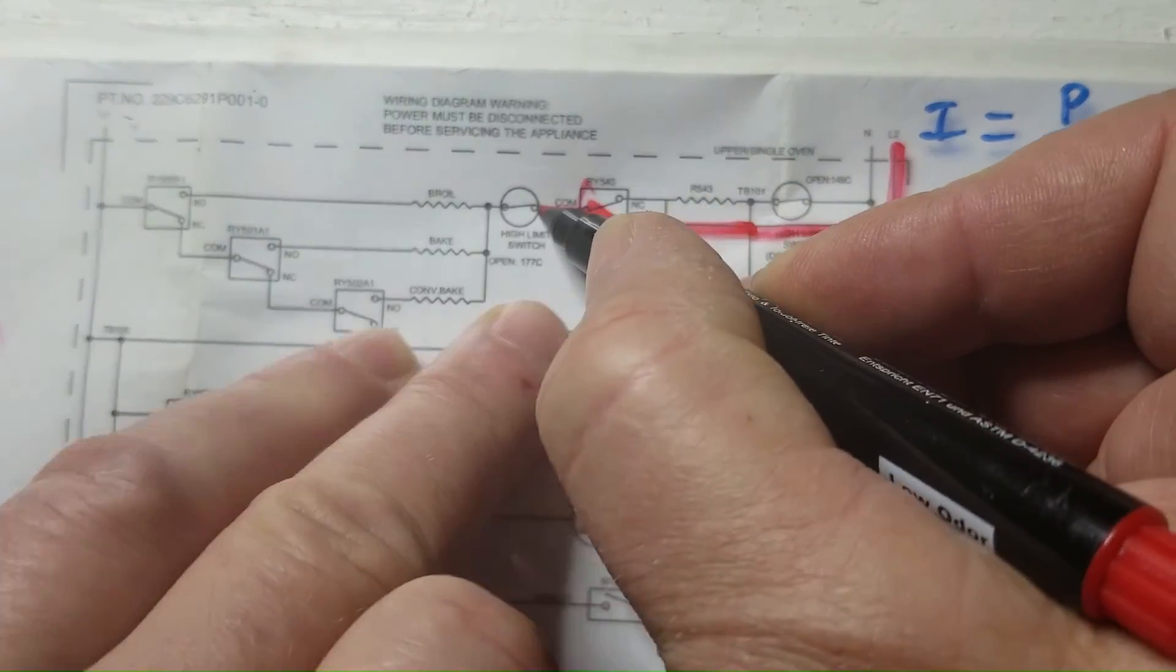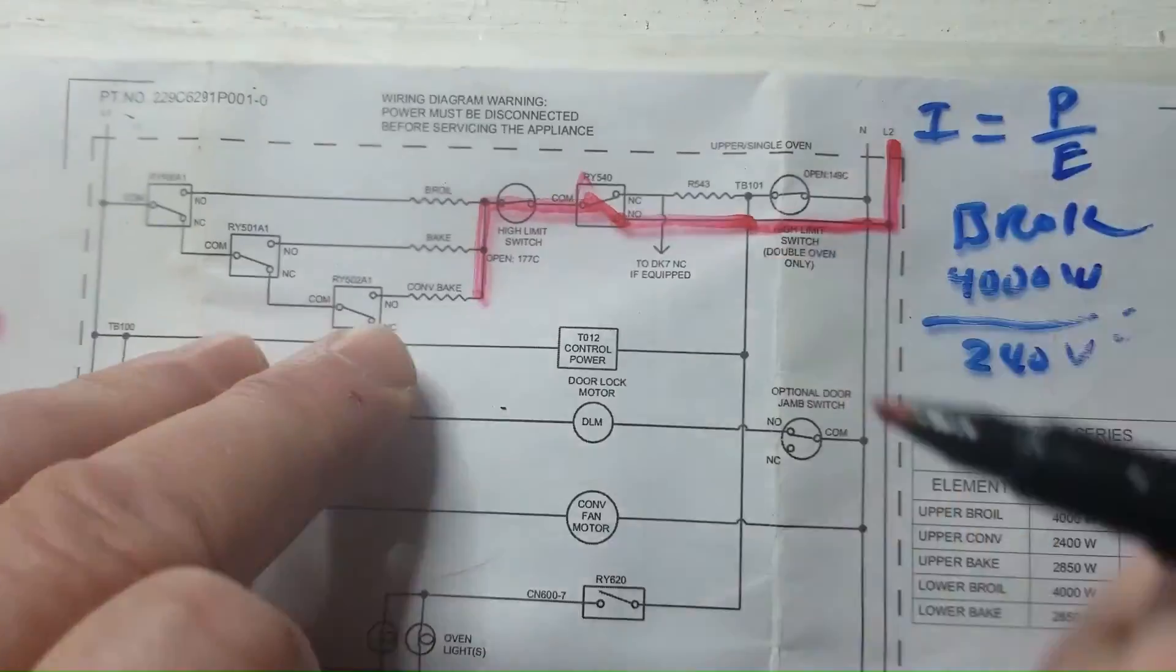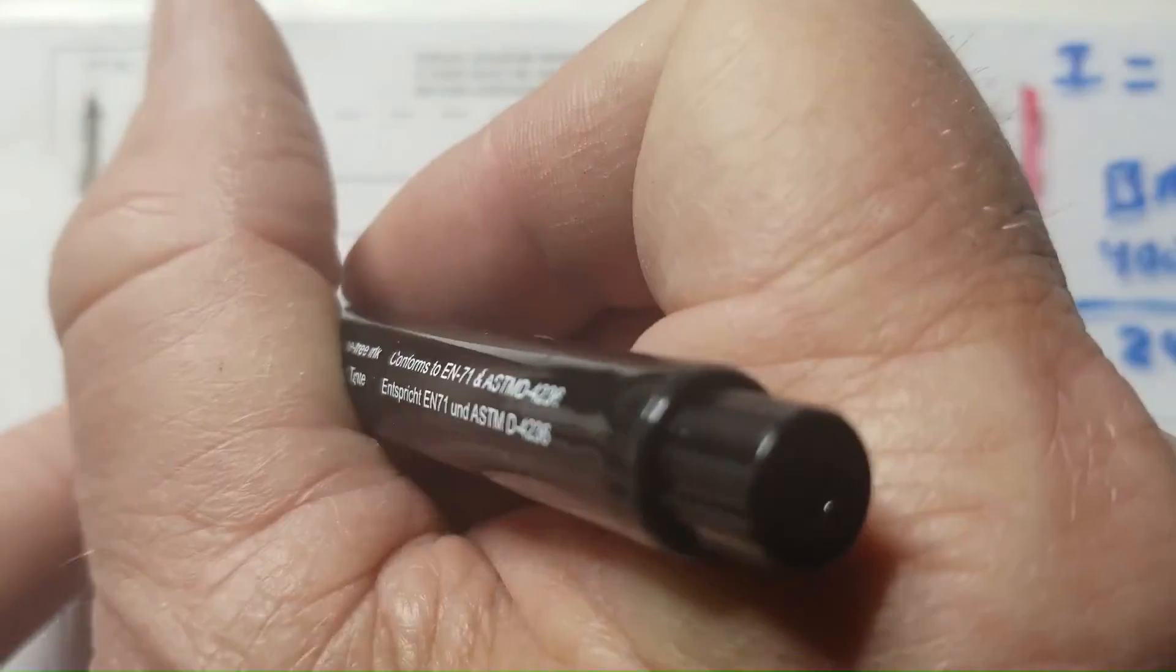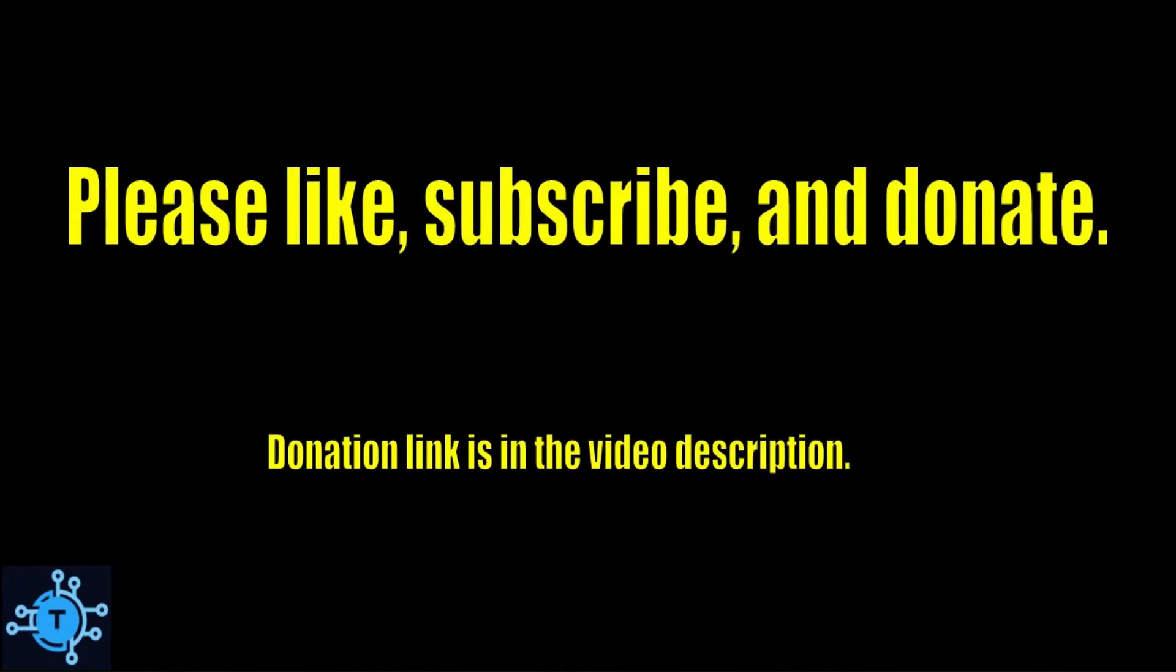So that was a schematic walkthrough of how an oven bake circuit typically works and one of the ways in which they commonly fail. I hope you found this video interesting and informative. If so, please give it a thumbs up and subscribe to this channel.